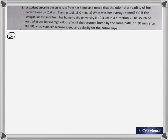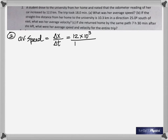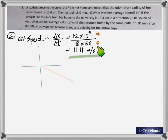On to the second one. A student is driving from her home to the university — that was 12 kilometers. The trip took 18 minutes. What was the average speed? Just like the previous problem, find total distance divided by total time. Convert kilometers to meters by multiplying by 1000, and 18 minutes is 18 times 60 seconds.